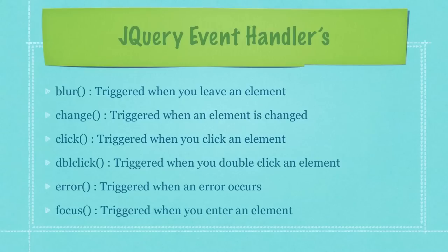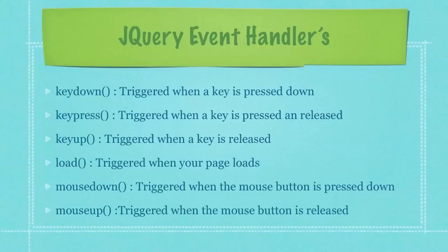You have the blur event handler, which is triggered when you leave an element. Change is triggered when an element is changed. Click is triggered when you click an element with the mouse. Double click is triggered when you double click an element with the mouse. Error is triggered when any error occurs. And the focus event handler is triggered when you enter an element.